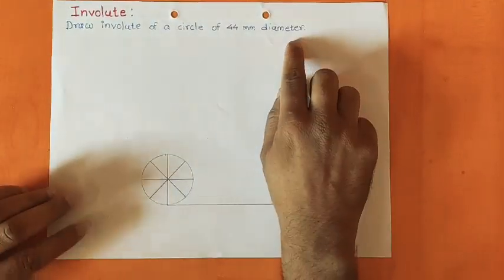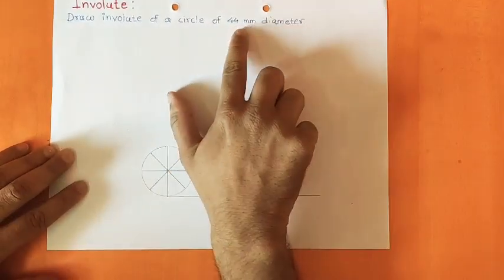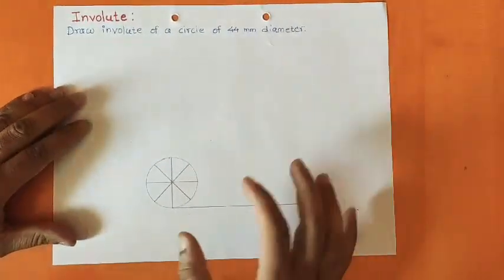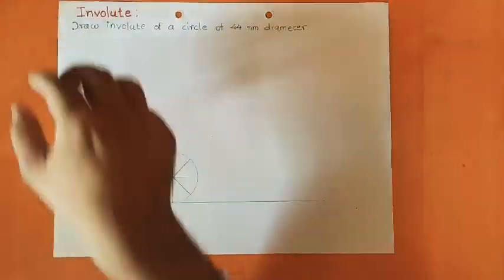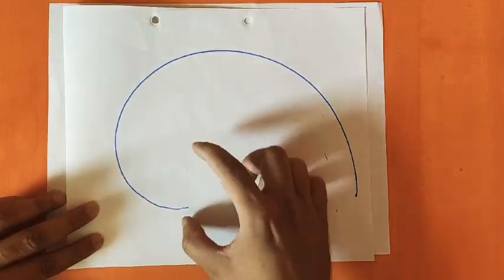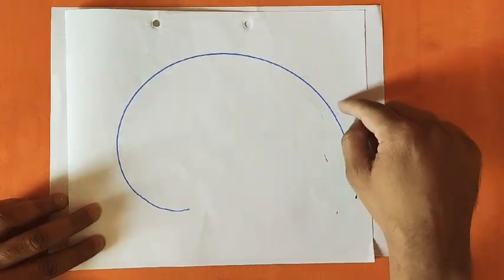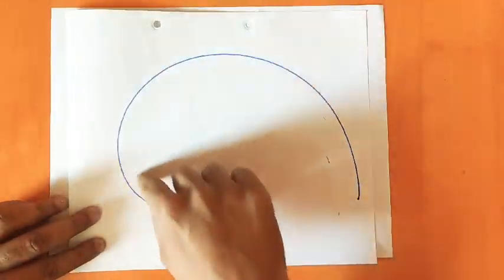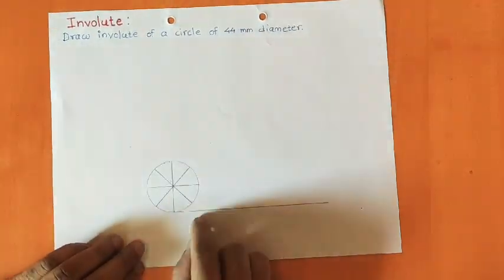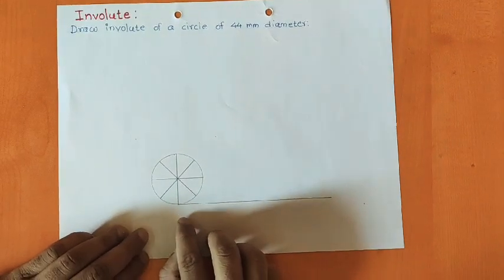The problem is: draw the Involute of a circle of 44mm diameter. First of all, you have to understand the location of the circle on the page. If you draw the circle somewhere in the middle of the page, it may be possible that you are not able to trace your curve properly. So the position where you are going to draw the circle is going to play an important role.